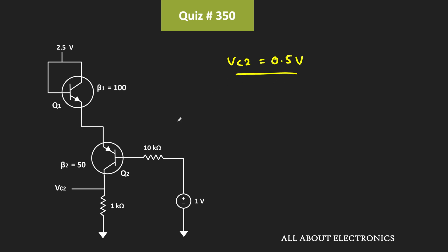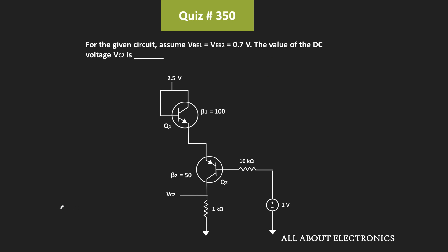So in this way, we found the collector voltage of this second transistor. And from this, we can say that for the given question, the value of this voltage VC2 is equal to 0.5V.